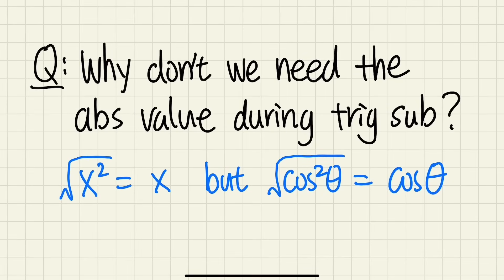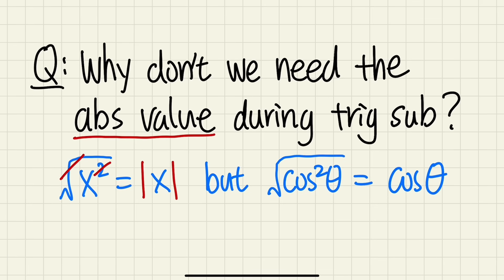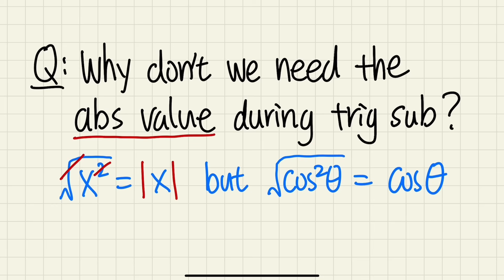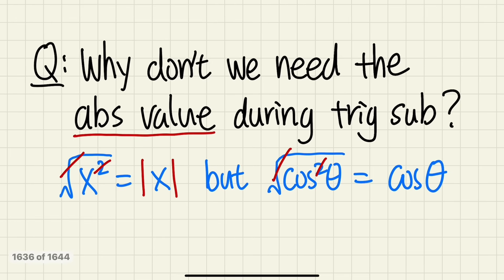Today I'm going to answer the question: why don't we need the absolute value when we do trig substitution for an integral? When we simplify the square root of x squared, we don't just get x, because x could be negative. To prevent the output of the square root from being negative, we put absolute value around x. But for a trig substitution expression like square root of cosine squared theta, it seems we can just cancel and get cosine theta — but cosine could be negative sometimes. So why don't we put the absolute value?